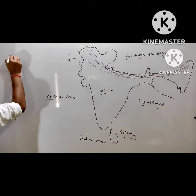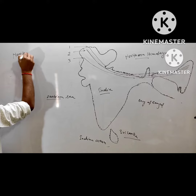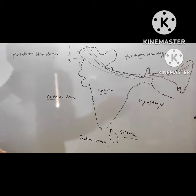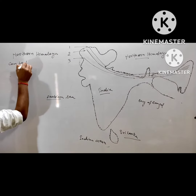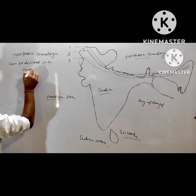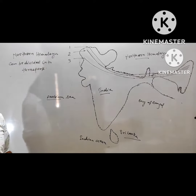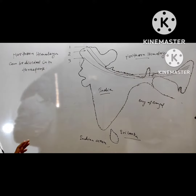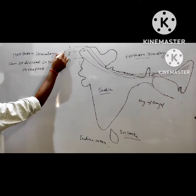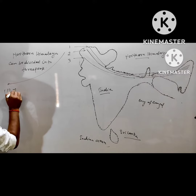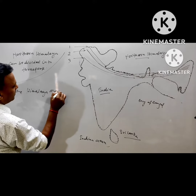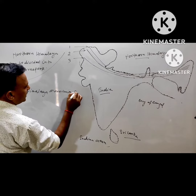Northern Himalaya can be divided into three parts. The first part is the Himalaya mountain range.